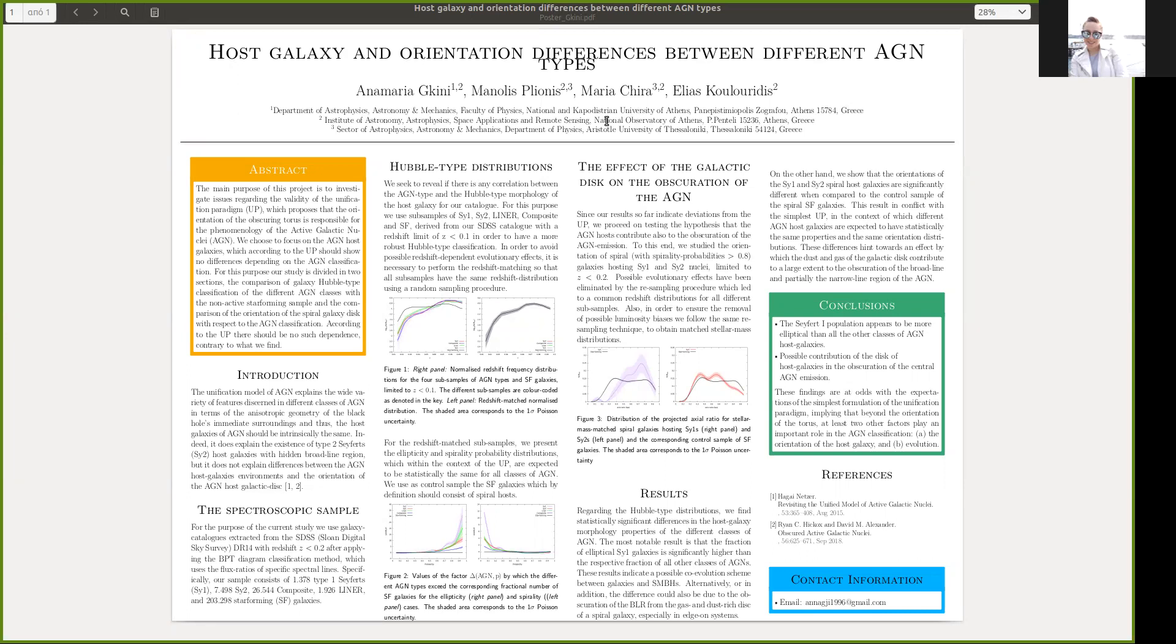For the first part, we used subsamples of the respective galaxies up to redshift 0.1, because at higher redshifts the structural features are difficult to discern. Additionally, in order to avoid possible evolutionary effects, we matched the redshift distributions to a common fractional distribution.